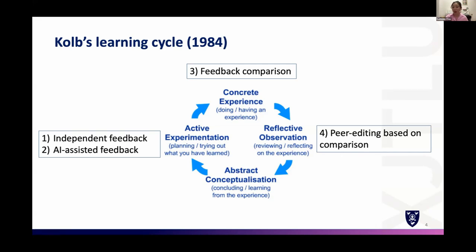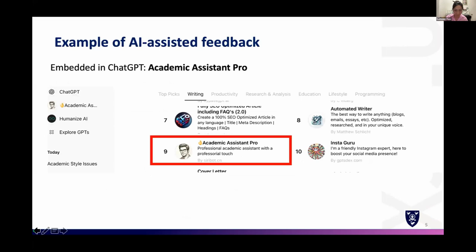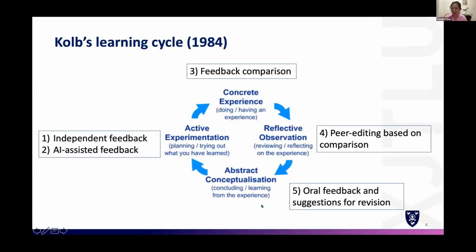Here is an example from ChatGPT. I uploaded the sample and the prompt was given. You can see issues are identified with a few examples, but not all examples are given, and no specific suggestions are provided. At this point students can focus on, say, informal tone, find more examples themselves, and then provide revision examples.